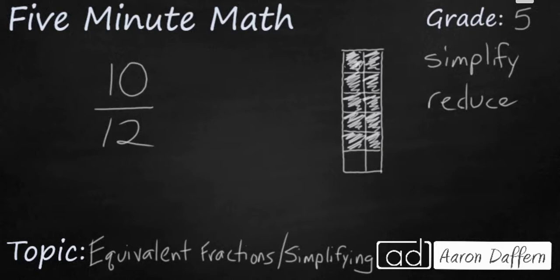Sometimes you'll come across a fraction like 10 twelfths and you'll be asked to simplify or reduce the fraction. What that means is you're going to make an equivalent fraction, but this time you're going to make it smaller. So let's look at a picture first. Anytime you make an equivalent fraction, remember the amount of shaded area doesn't change. You simply make the pieces bigger or you make the pieces smaller.